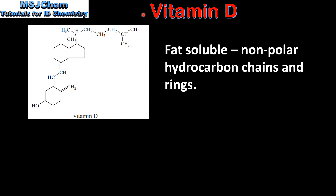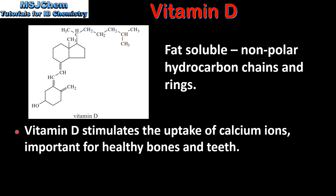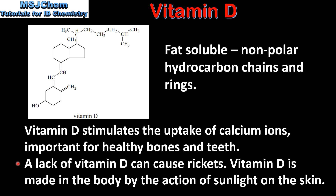Vitamin D is fat soluble. If we look at the structure, we can see it has non-polar hydrocarbon chains and rings. Vitamin D stimulates the uptake of calcium ions, which are important for healthy bones and teeth. A lack of vitamin D can cause rickets, which is a disease where the bones do not harden properly. Vitamin D is made in the body by the action of sunlight on the skin.